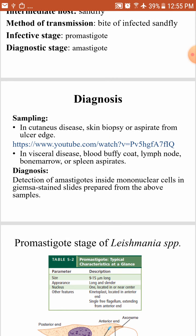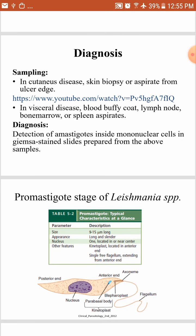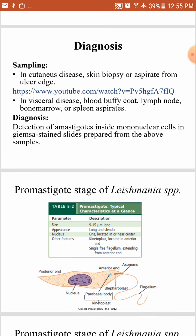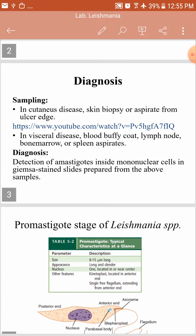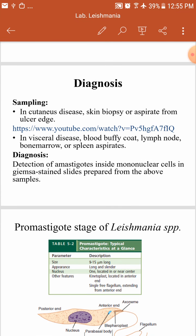We will talk about the promastigote and amastigote in detail. For diagnosis, we need to take a sample and examine it under the microscope looking for amastigotes. For cutaneous disease, we take a skin biopsy or an aspirate from the ulcer edge — we have an ulcer in cutaneous leishmaniasis, and we either take a biopsy or an aspirate from its edge.